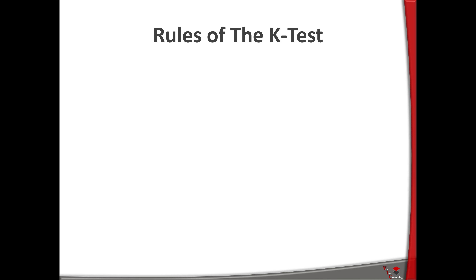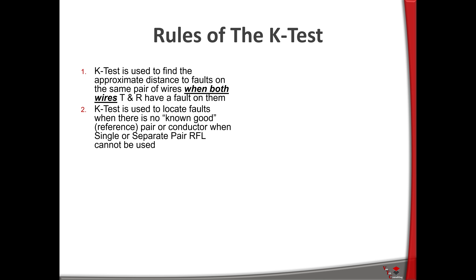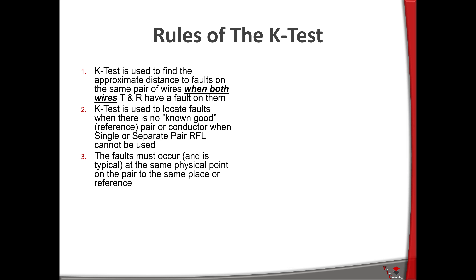When we got into the editing of the video, I realized that we didn't explain the rules of doing a K test, so we had to pump the brakes and go back to the basics. A K test is a very specific test used to find approximate distance to faults when the same pair of wires — both conductors — are faulted. We can use the K test if there is no known good reference pair. The faults must occur at the same physical point on the pair — you can't have one fault at a hundred feet and the other at a thousand feet; it's not going to work.